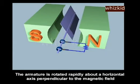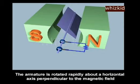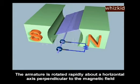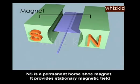The armature is rotated rapidly about a horizontal axis perpendicular to the magnetic field. NS is a permanent horseshoe magnet.